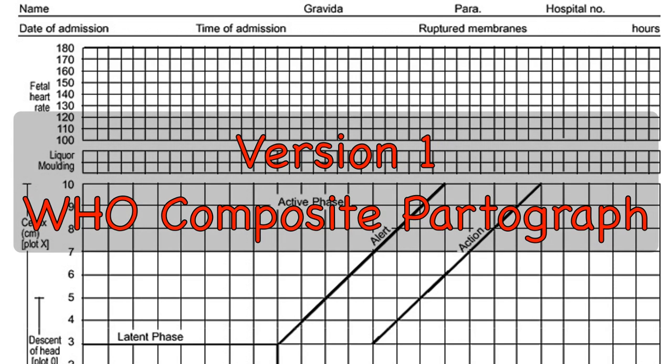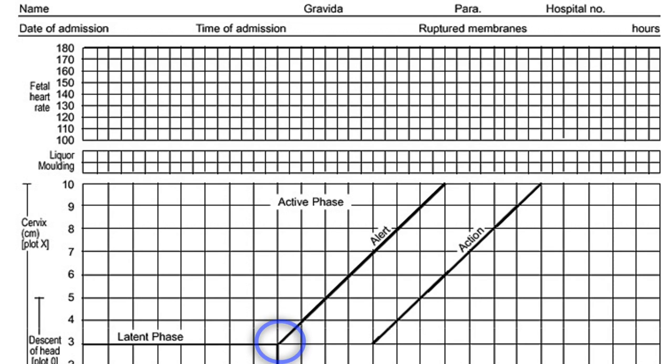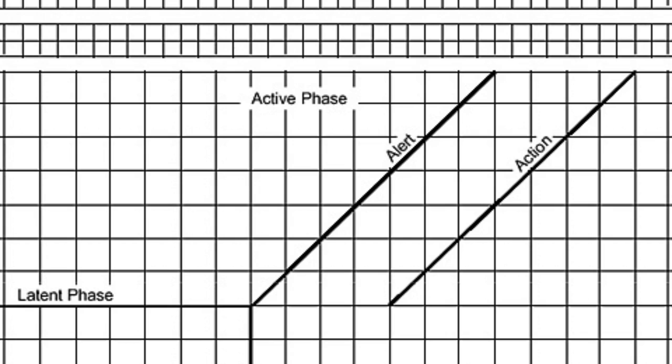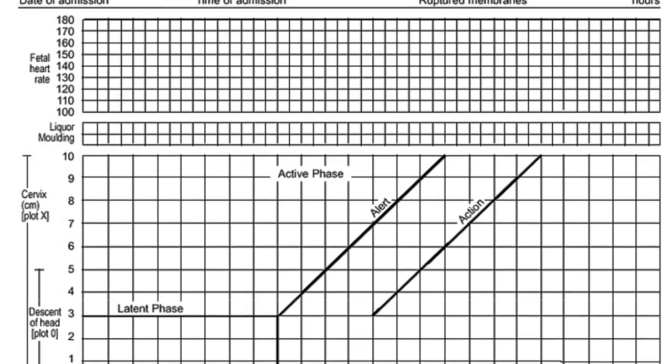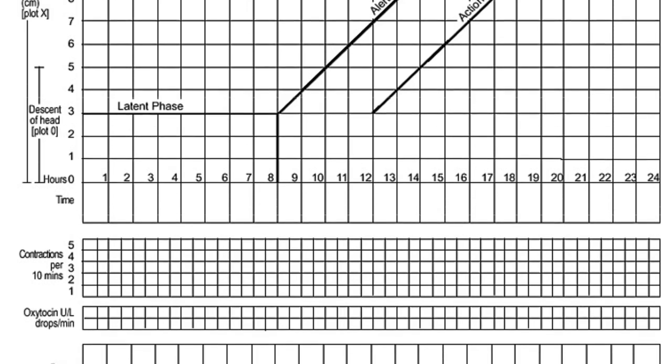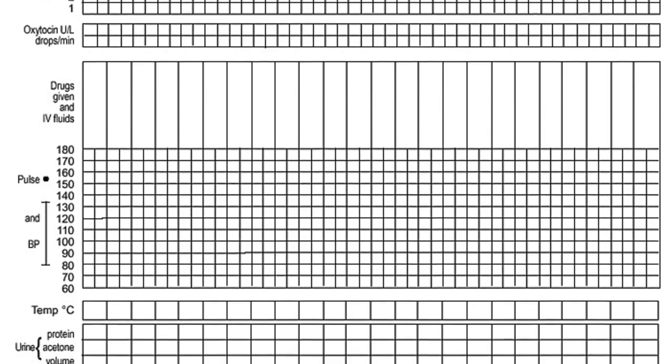The first of these partographs, also called as the composite partograph, includes a latent phase of 8 hours and an active phase starting at 3 cm dilatation. It has an alert line with a slope of 1 cm per hour which commences at 3 cm dilatation and an action line which is 4 hours to the right and parallel to the alert line. It also provides space for recording descent of the fetal head, indicators of maternal and fetal well-being and medication administered.